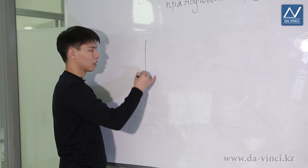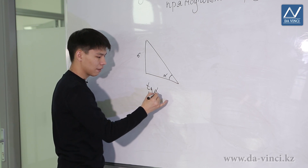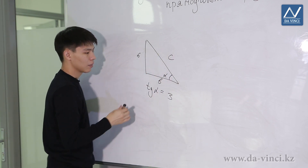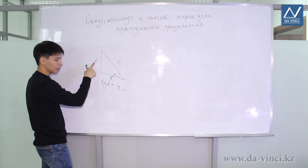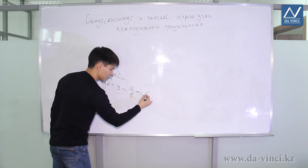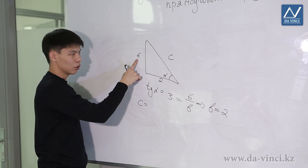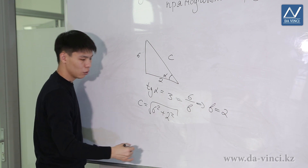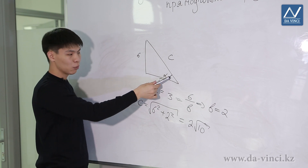Let's consider the last example. We have a right triangle where one of the legs equals 6, and we know that the tangent of the opposite angle alpha is equal to 3. It is required to find the other leg and the hypotenuse. Let's denote the other leg as B and the hypotenuse as C. By definition, the tangent is the ratio of the opposite leg to the adjacent: in our case, 6 divided by B equals 3, so B equals 2. Then by the Pythagorean theorem, C equals the square root of 6 squared plus 2 squared, which is the square root of 36 plus 4 equals the square root of 40, or 2 times the square root of 10. Thus, knowing only one leg and the tangent, we found all the other values.